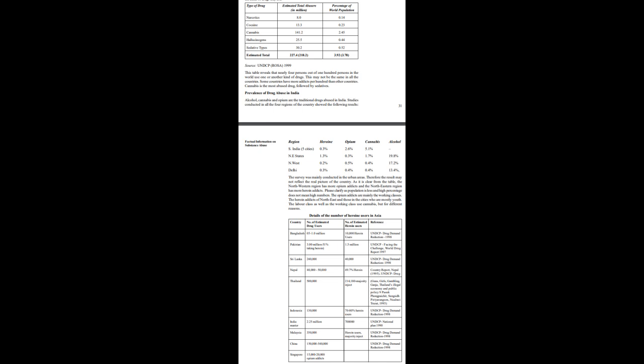3.4 Facts and Figures Related to Drug Abuse. The United Nations Drug Control Programme's Annual Report 1999 has given the following facts and figures of the world, estimating the number of drug abusers and the kinds of drugs they use. This table reveals that nearly 4 persons out of 100 in the world used one or another kind of drug. This may not be the same in all countries — some countries have more addicts per 100 than others. Cannabis is the most abused drug, followed by sedatives.